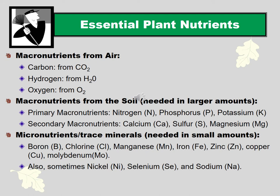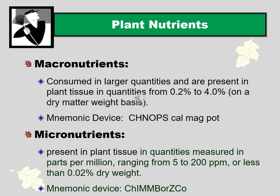Let's talk about what plant nutrients are. There are macronutrients — nutrients needed in large amounts — including carbon, hydrogen, oxygen, nitrogen, phosphorus, potassium, calcium, sulfur, and magnesium. The first three, carbon, hydrogen, and oxygen, are obtained from air or water, so as plant caregivers we don't need to focus on those in our fertilizer applications. There are also micronutrients needed in small trace amounts.